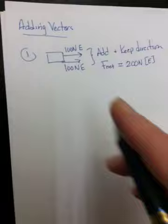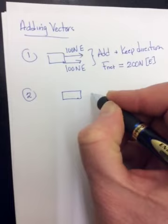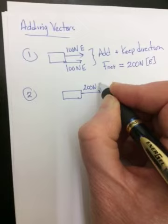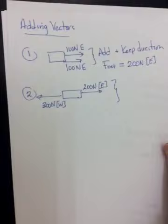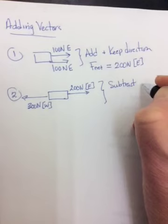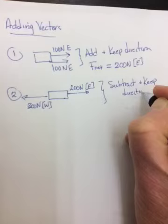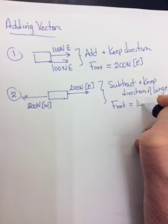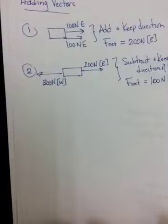Case one is when they're acting in the same direction. Case two is if they're acting in opposite directions. So let's make this one 200 newtons east and let's make this one maybe 300 newtons west. The rule in this case is you subtract them and keep the direction of the larger. So when we subtract, we get a hundred newtons. The larger one is west, so our net force, our total force, our resultant will be a hundred newtons west.